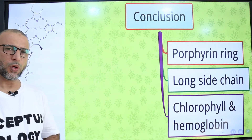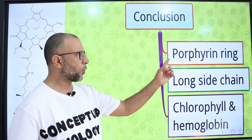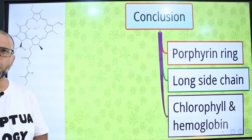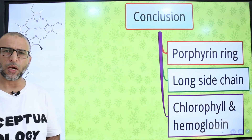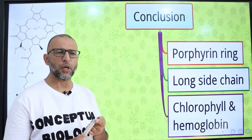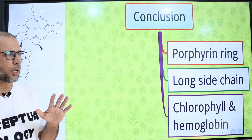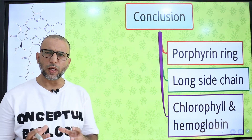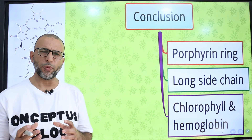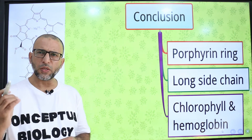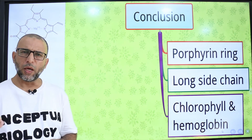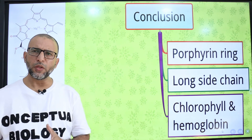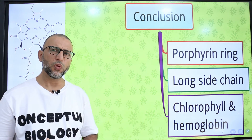To sum up: a chlorophyll molecule has two main parts — the porphyrin ring and the long side chain called the phytol tail. The porphyrin ring is composed of four pyrrole rings, and each pyrrole ring is a five-member molecule with one nitrogen atom and four carbon atoms. There is a striking similarity between chlorophyll and hemoglobin; the difference is in the central metal ion — iron in hemoglobin and magnesium in chlorophyll.